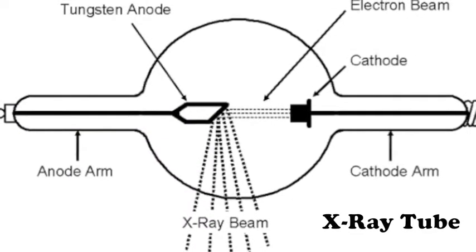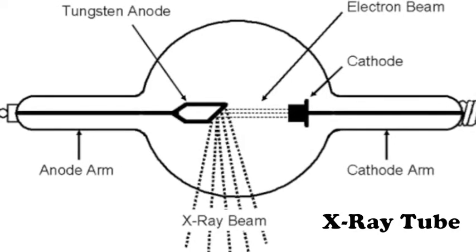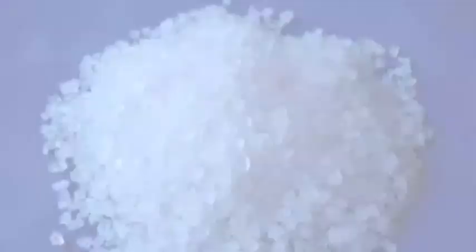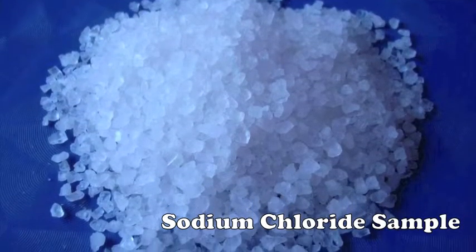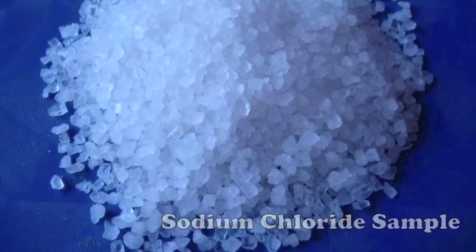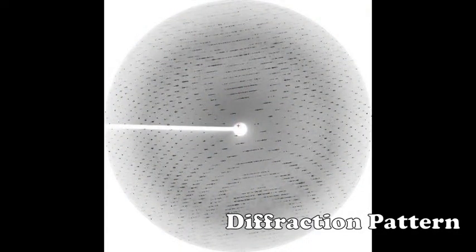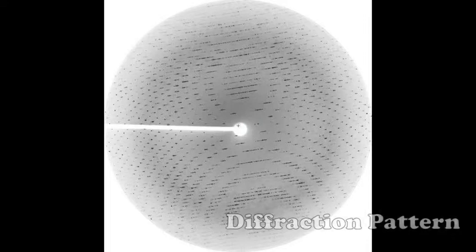In their experiment, parallel beams of X-ray radiation were fired from an X-ray tube at a sample of sodium chloride. They used an ionization chamber to detect the scattered X-rays, enabling them to determine the position and intensity of the diffracted rays.